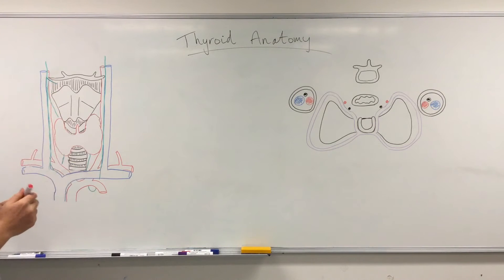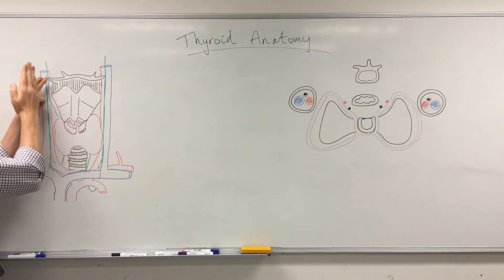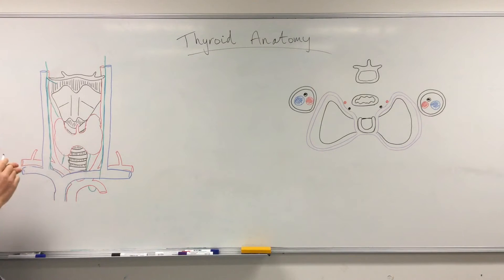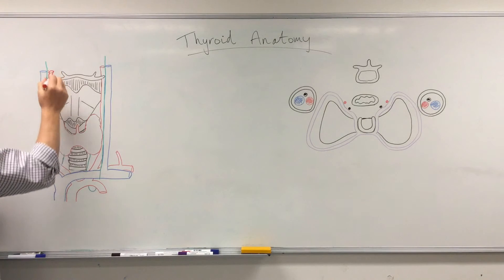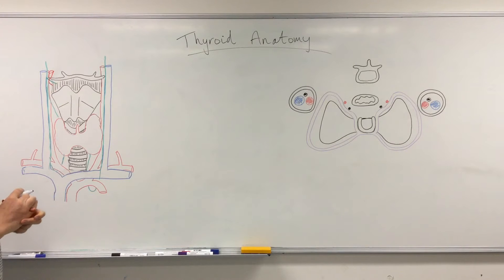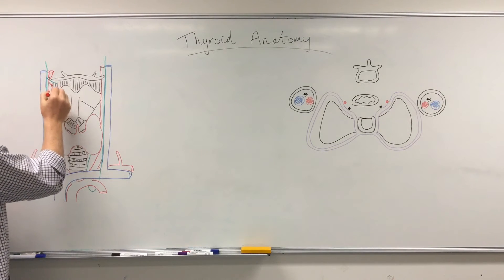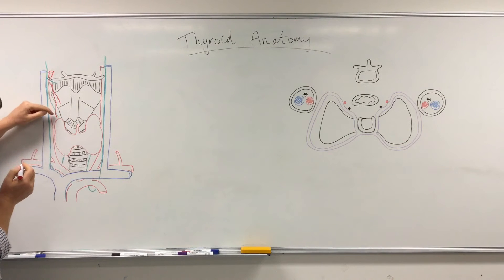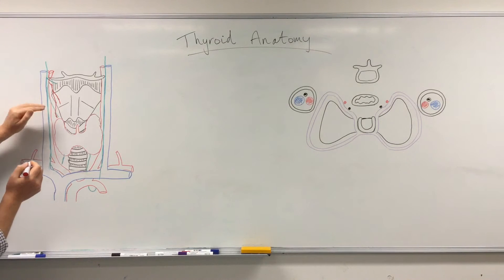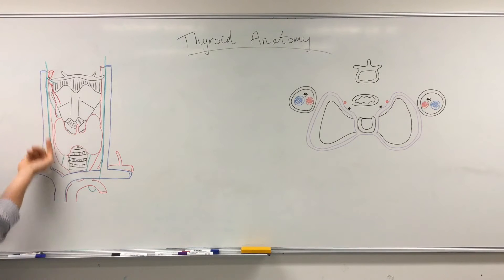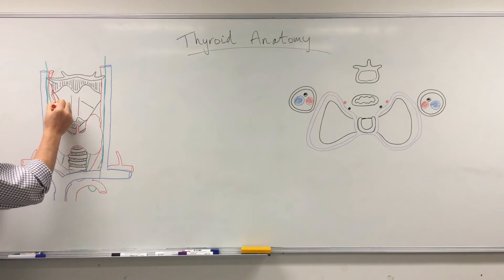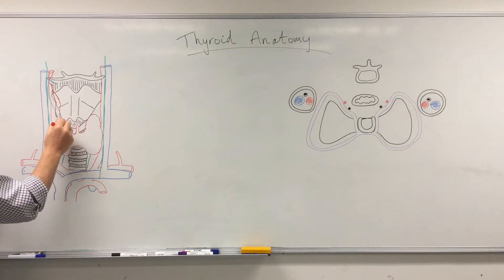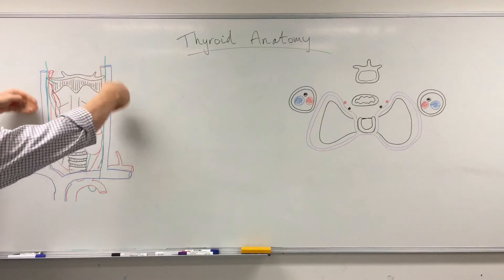For the arterial supply to the thyroid: as the common carotid ascends, it bifurcates into external and internal carotid arteries. The first branch of the external carotid gives the superior thyroid artery, which splits into an anterior branch and a posterior branch. The posterior branch follows the external branch of the superior laryngeal nerve, running behind to supply the medial and lateral surfaces of the thyroid gland. The anterior branch supplies the anterior surface, on both sides.